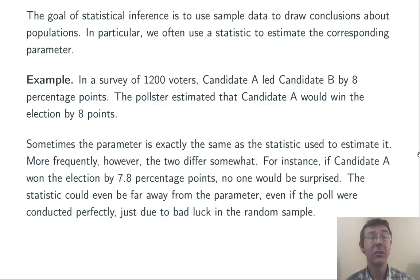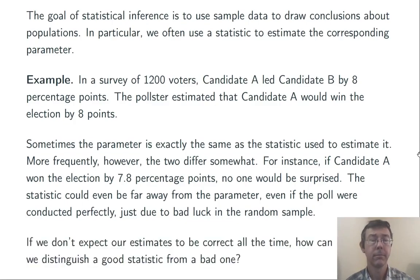However, the statistic could even be far away from the parameter, just through random chance. For instance, perhaps the pollster just happened to call a lot of voters that favor candidate A, just through random chance, and no fault of their own. However we've got a problem here. If the statistic isn't always going to be the same as the parameter, and if we don't really expect the statistic to always be the same as the parameter, how can we tell a good statistic from a bad one? To say it differently, how can we tell if the pollster is really doing their job right, or not?